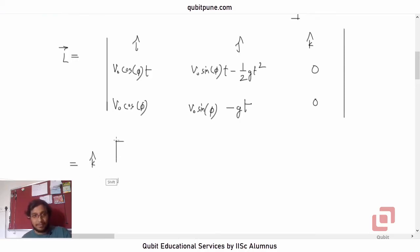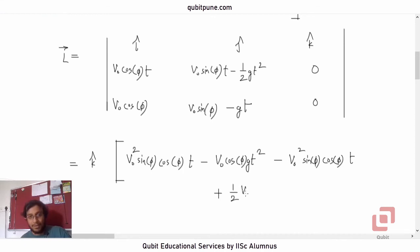V naught sin phi cos phi t minus V naught cos phi g t squared minus V naught squared. Oh, sorry. I think I missed V naught squared here, right? V naught into V naught. Yes, V naught squared. V naught squared sin phi cos phi t and now this time it will be plus half g t squared into this. So how much will that be? Half V naught cos phi minus half V naught cos phi g t squared.